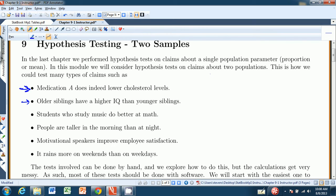And just like the medication A, here you'd have cholesterol levels before the medication and cholesterol levels after. So you have two samples. For this third one, students who study music do better in math, you'd take a sample from students who did study music, and a sample from students who did not study music, and you would compare their math scores.